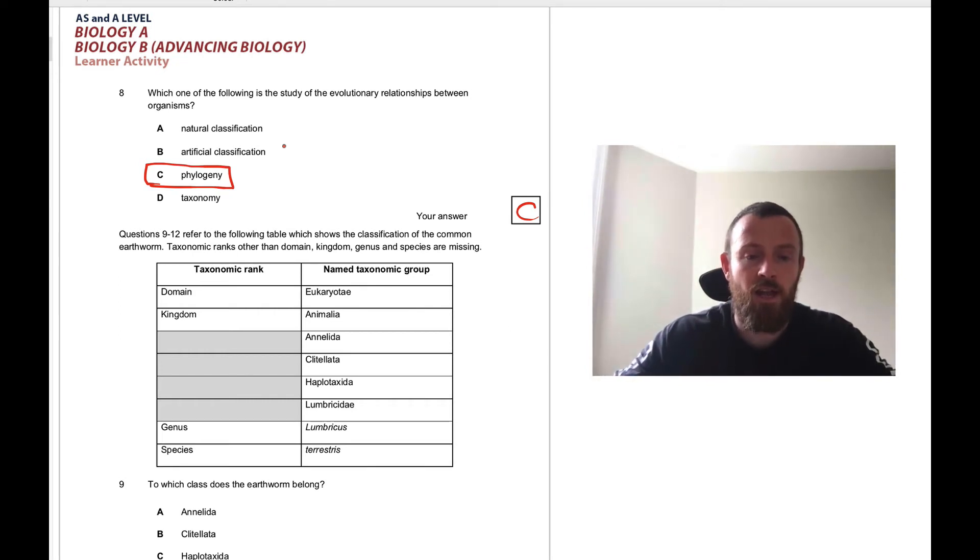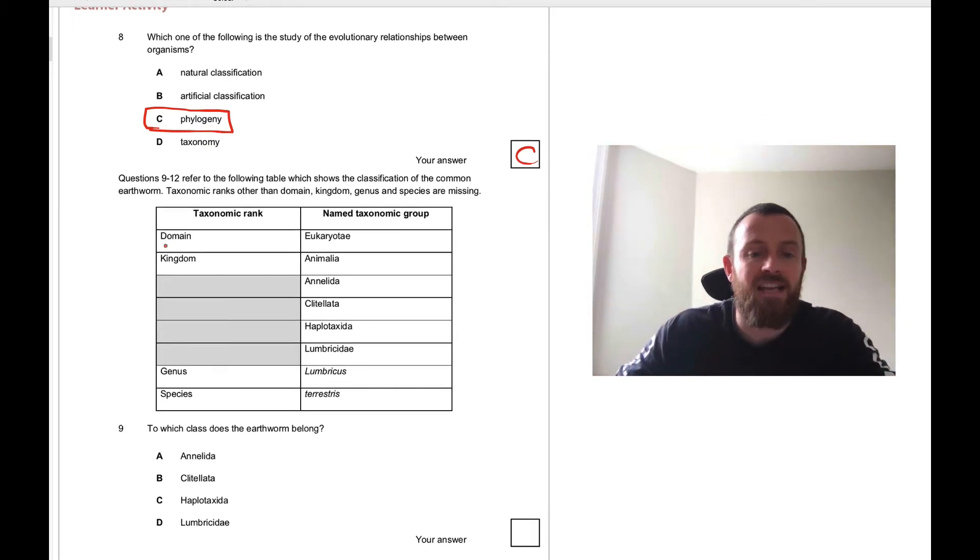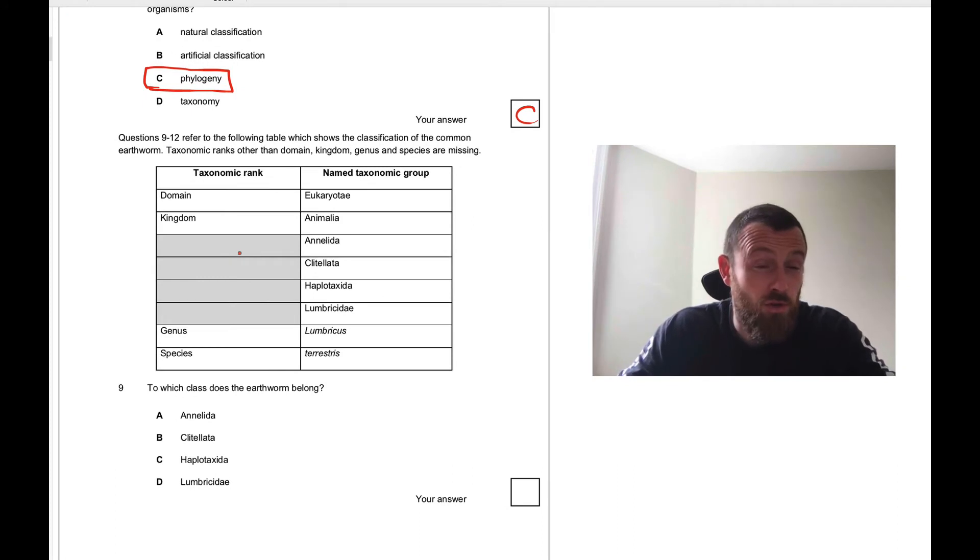Now for questions nine to twelve we first should write in the taxonomic ranks. Can you remember the mnemonic device that you use? The classical one that I've seen to remember is: Did King Philip Come Over From Great Spain? Domain, Kingdom, Phylum, Class, Order, Family, Genus, Species.